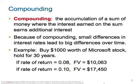Because of compounding, small differences in interest rates can lead to big differences over time — pay attention, this is important for your mortgages and investments. For example, if you buy $1,000 worth of Microsoft stock and hold it for 30 years: at an 8% rate of return, the future value is $10,063. At a 10% rate of return — just a 2% increase — the future value jumps to $17,450. A 2% difference in interest rate means a $7,000 difference in your return.